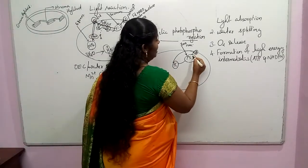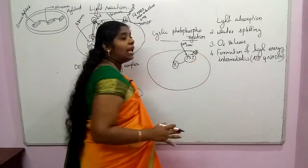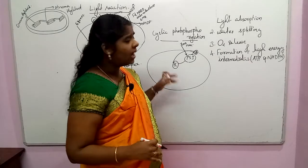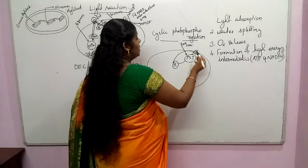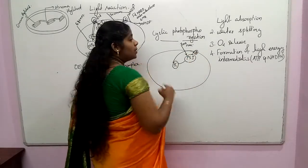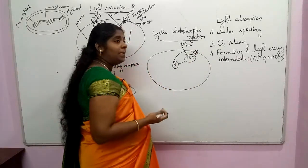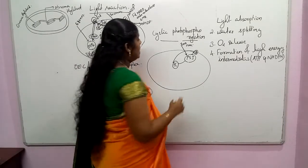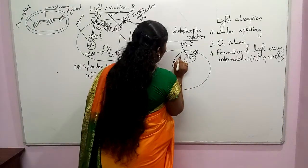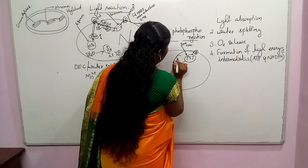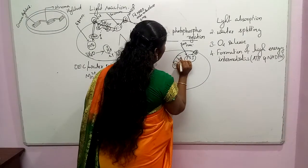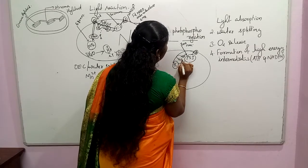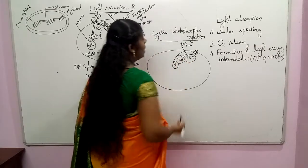When the electron is passing through plastocyanin, energy is released along the way. That energy is utilized for the phosphorylation of ADP, and one ATP molecule is formed.